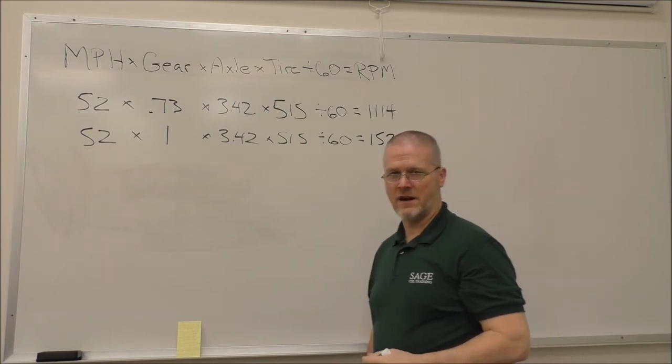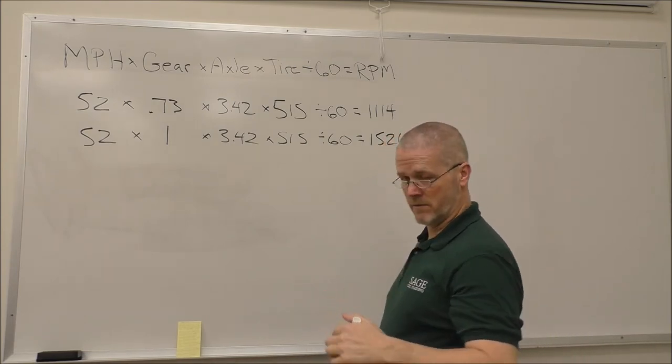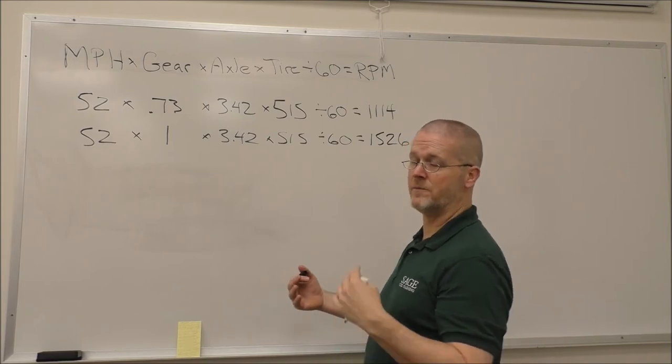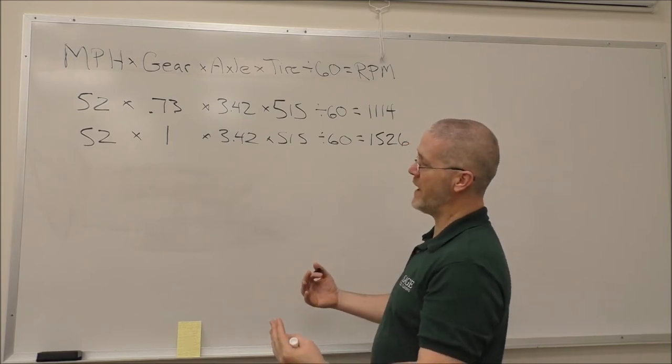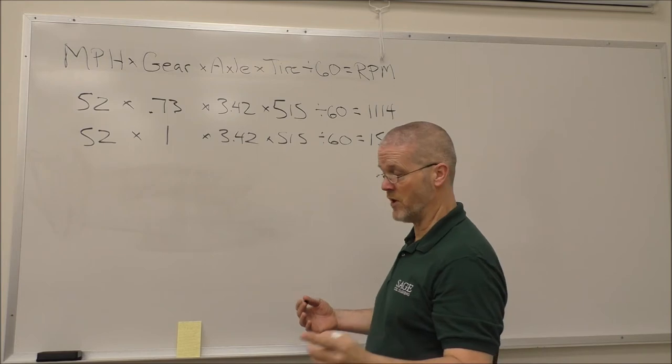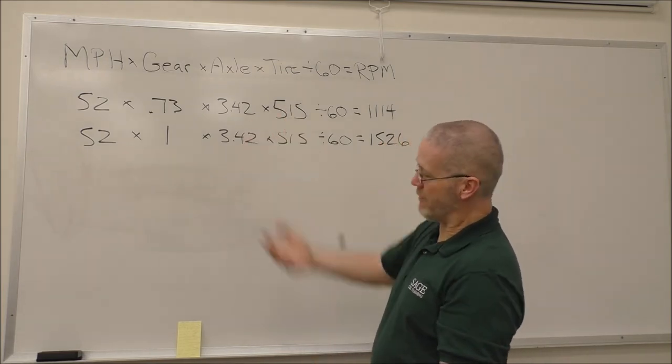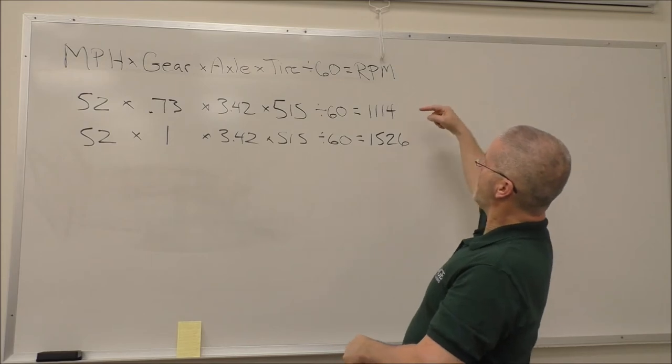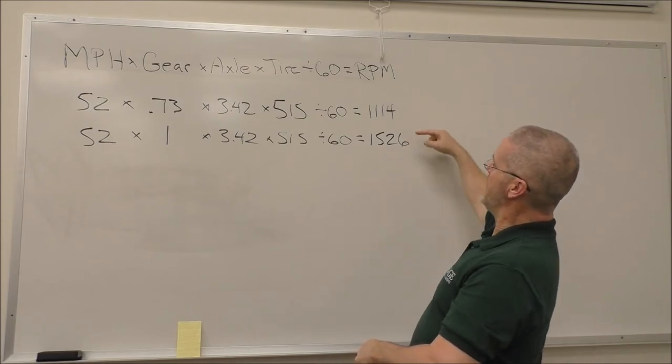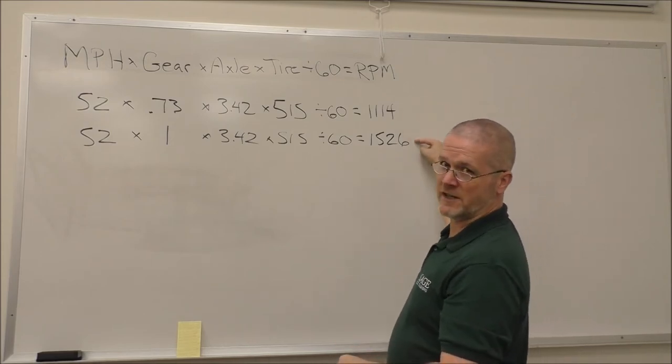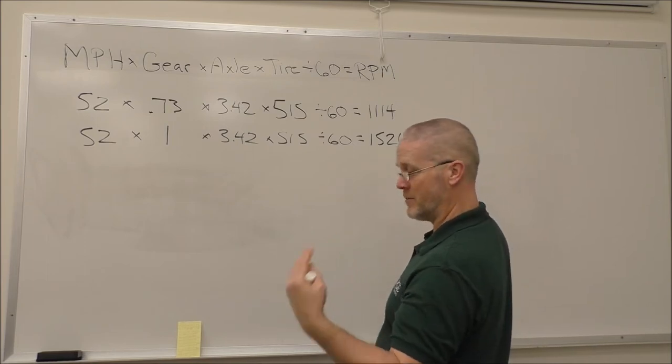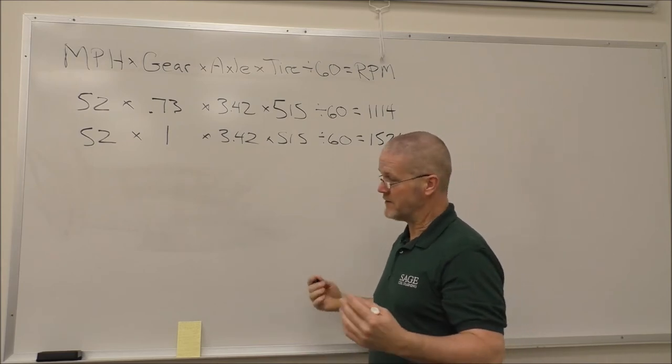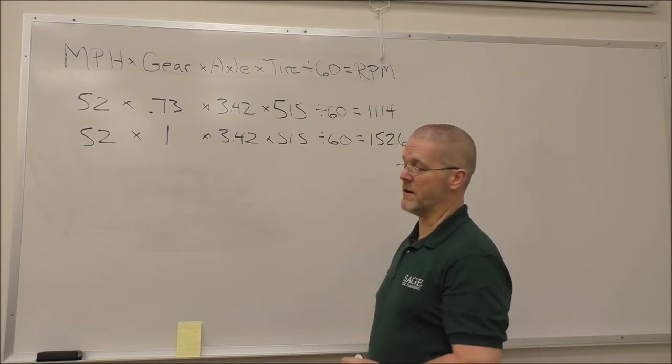So to change the gear, in theory, with your double clutching process, you're going to back off the throttle, press the clutch pedal down halfway so you don't damage your input shaft brake, slip the transmission out of tenth gear, close the clutch, run your RPM from the 1114 up to 1526, and right when you get there, dip that clutch pedal halfway and slip into ninth gear. And that's double clutch shifting, in theory.